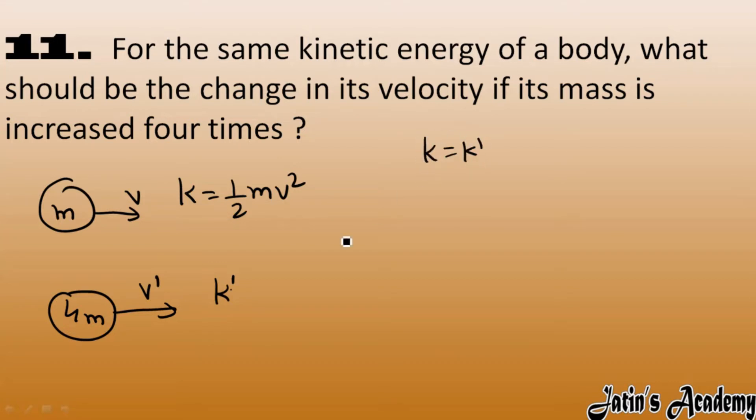This v dash means new velocity. So just equate these equations: half m v square equals half four m v dash square.